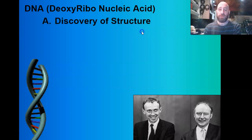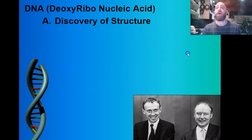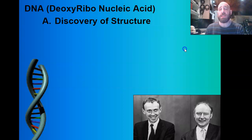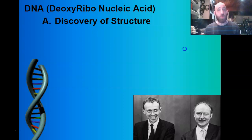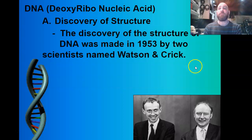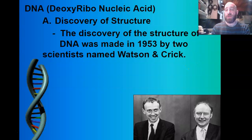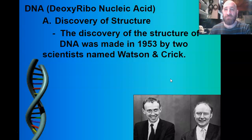Who discovered DNA? It wasn't one person — it wasn't even just two people. But there are two people credited with really identifying the molecule of DNA. Several scientists at the same time were trying to discover what this molecule was. They knew it was in the nucleus and they knew it was important, but they didn't exactly know what it looked like or how it worked. The discovery was credited to James Watson and Francis Crick, and was made in 1953.